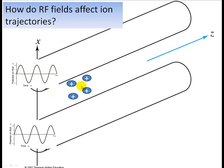Now let's think about what these ions are doing. Let's think about how their trajectories are influenced. Anytime that the voltage is positive, the ions will be repelled by the rod. And anytime the voltage on the rod is negative, the ions will be attracted to it.